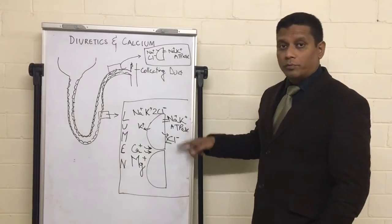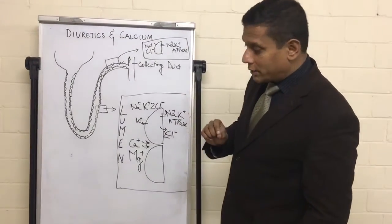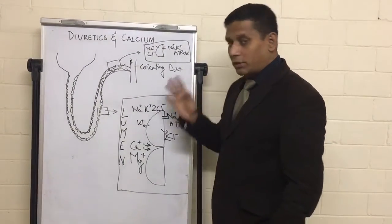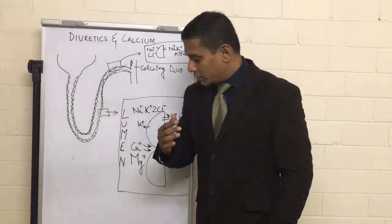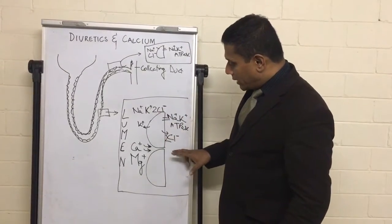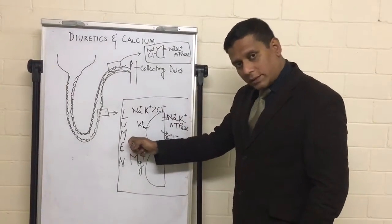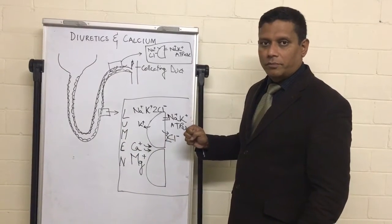So the body actually gained one negatively charged molecule or ion, which the body doesn't like, so there's an electrical difference now. So to maintain that, the body says, 'Okay, I'm going to pull back some more positively charged stuff from the urinary lumen.'